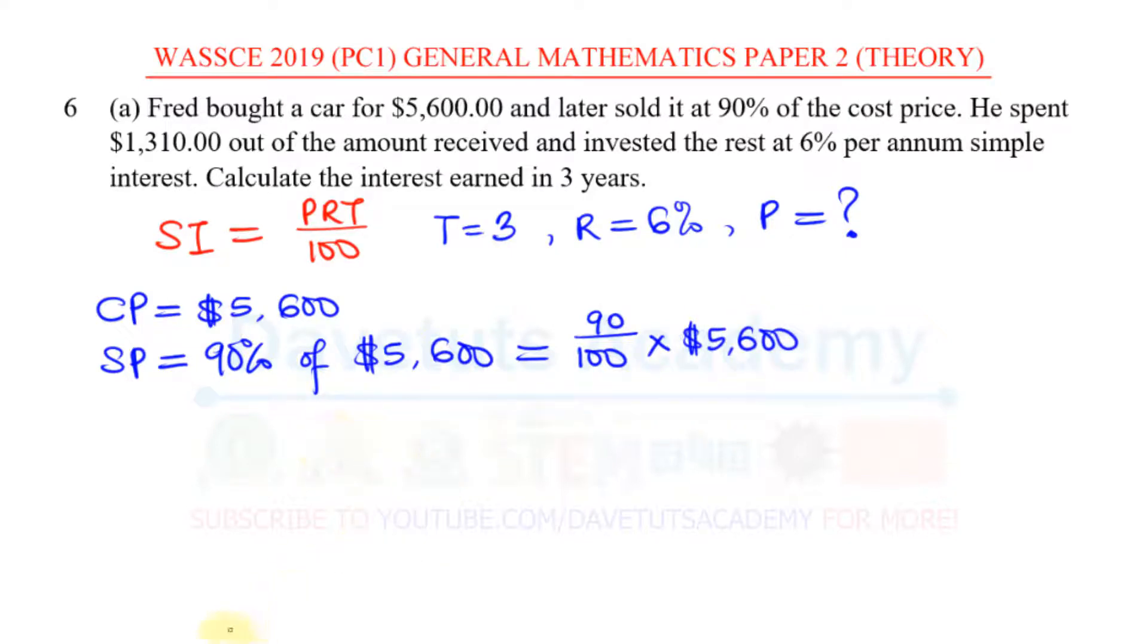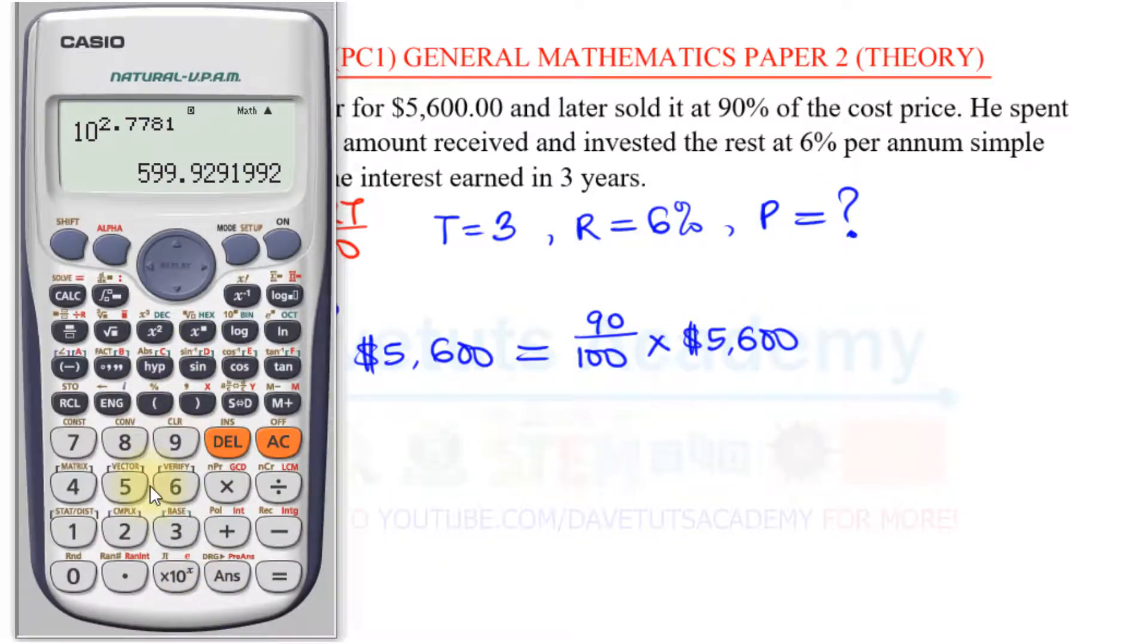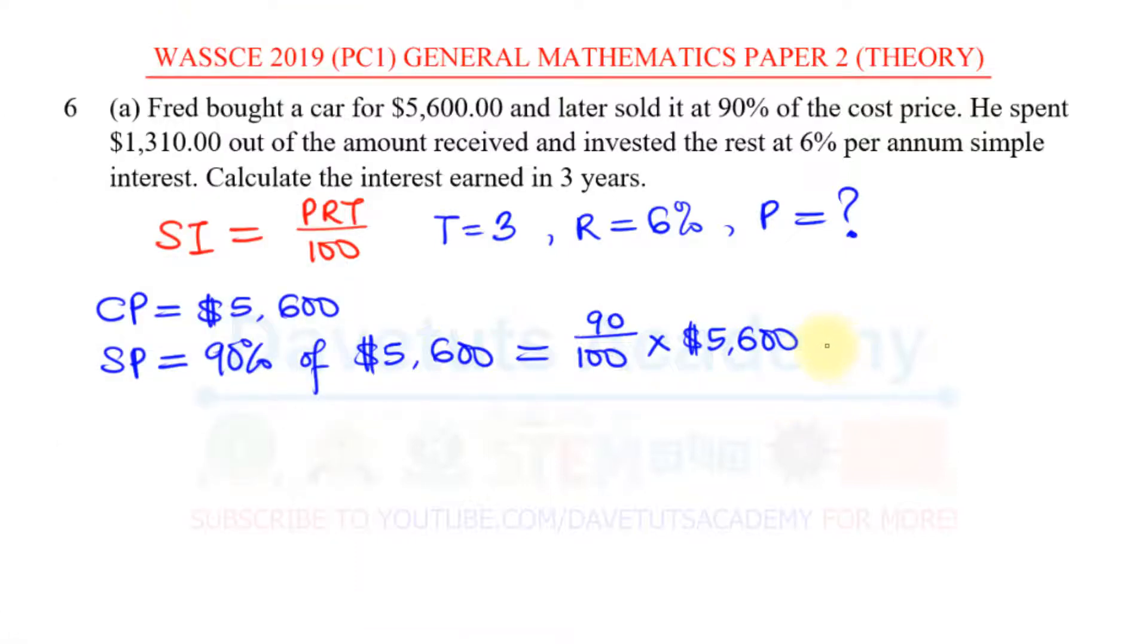Let's take our calculator to work this out. We have 90 times 5,600 divided by 100, that's $5,040. So this is $5,040. Please don't make that silly mistake in your question.